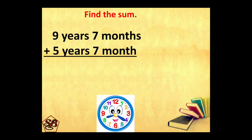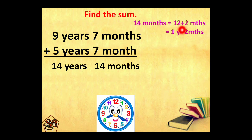Here is another example. We will be adding the smaller units. 7 plus 7 is 14. 9 plus 5 will also give 14. So the answer is 14 years 14 months. Comparing this, 14 is greater than 12. This 14 months can be written as 12 plus 2 months. 12 months is equal to 1 year. This 1 year will be added to these years. So the answer will be 15 years 2 months.